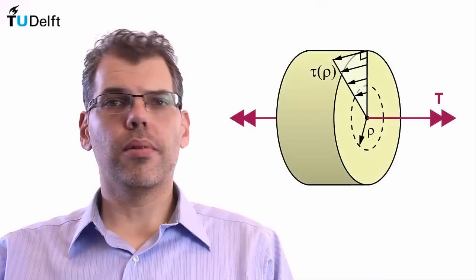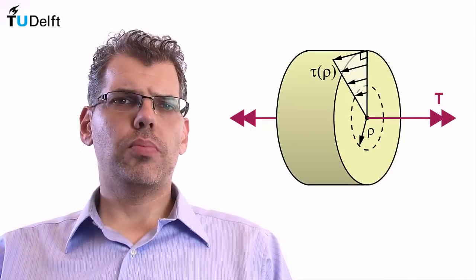By now you are very familiar with the linear shear stress distribution in a solid circular shaft subjected to torsion as pictured here. But I have a problem with this shaft.